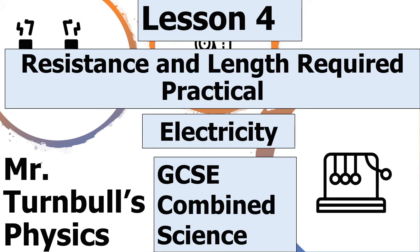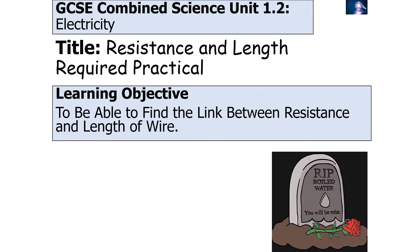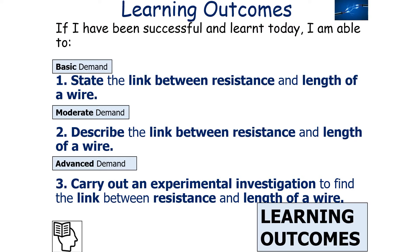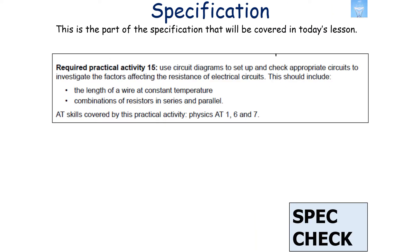Hello and welcome to today's lesson on resistance and length of wire required practical, which is part of the electricity topic in GCSE combined science. In this lesson we're going to look at finding the link between resistance and the length of a wire. If we've been successful, we can state and describe that link, and carry out an experimental investigation — required practical 15 of the GCSE combined science specification.